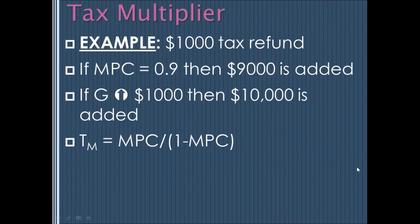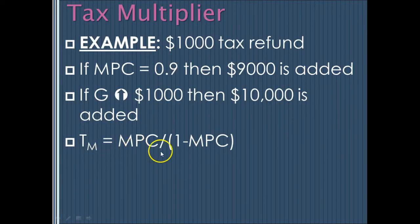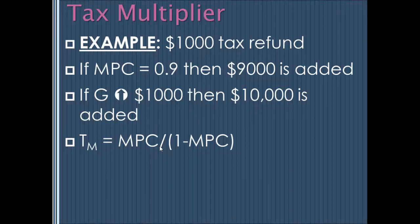The tax multiplier is much less than 1/(1 - MPC). Working through the math, the tax multiplier equals MPC/(1 - MPC), which is a smaller number than the government spending multiplier. Taxes do multiply either positively or negatively depending on whether you're increasing or decreasing them, but they don't have the same effect as government spending. We'll work through problem sets on this, and I'll answer your questions next time in class.